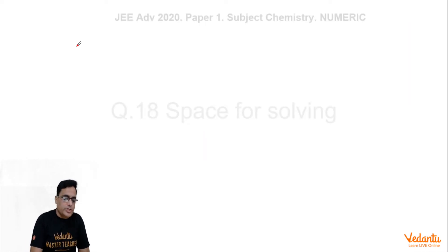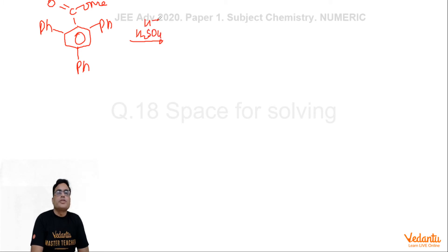Actually the structure is like this: you are having Ph, Ph and Ph, and here you have CO and OMe, and this is also of course benzene ring. Now you are treating it with H2SO4 concentrated which will give H plus. H plus gets protonated here on this ester oxygen.